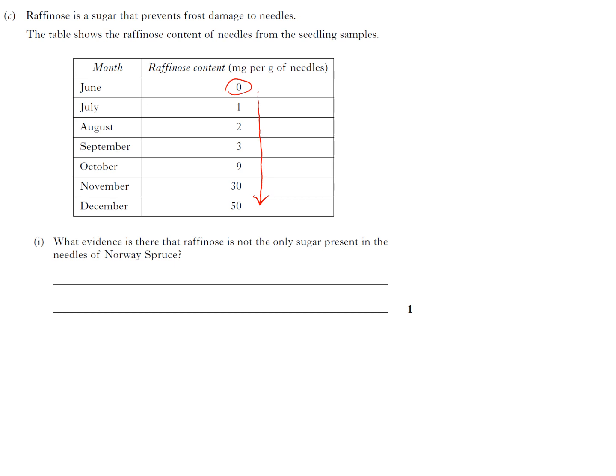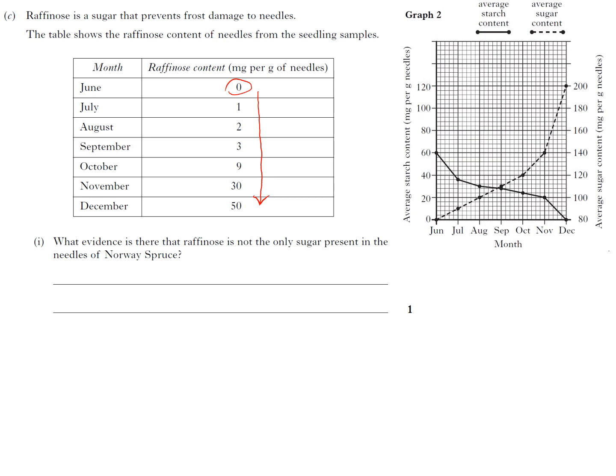What evidence is there that raffinose is not the only sugar present in the needles of Norway Spruce? Now if you just look at this, you have no information, but you do have another graph which told you the average sugar content. It didn't tell you glucose, didn't tell you raffinose, it just said sugar, and it says raffinose is a sugar, one of the sugars.